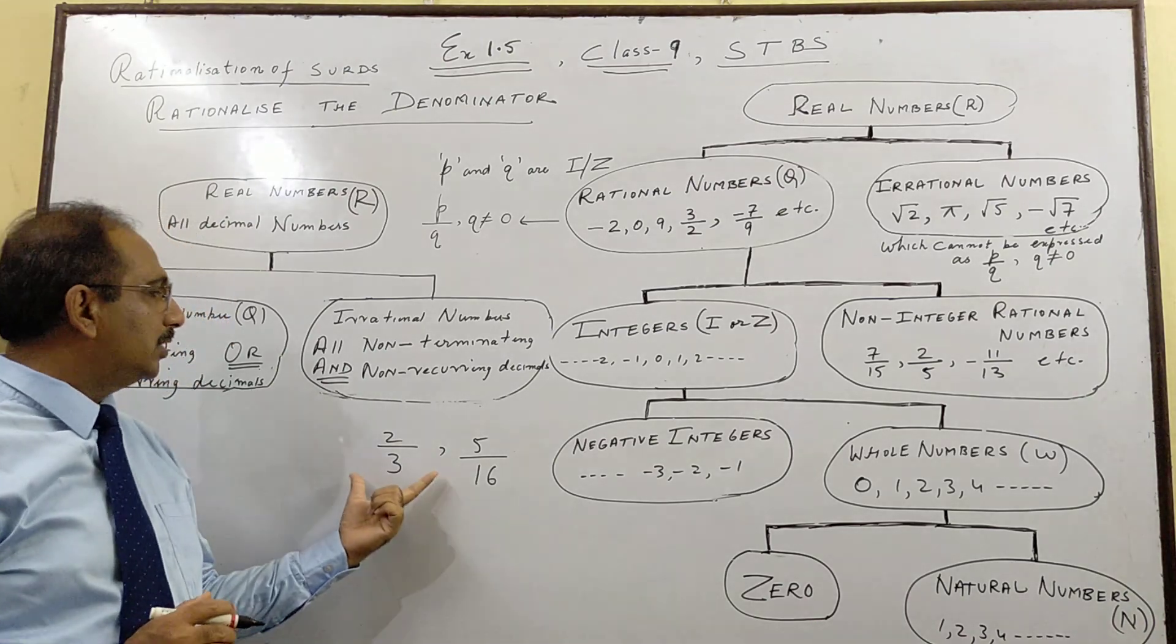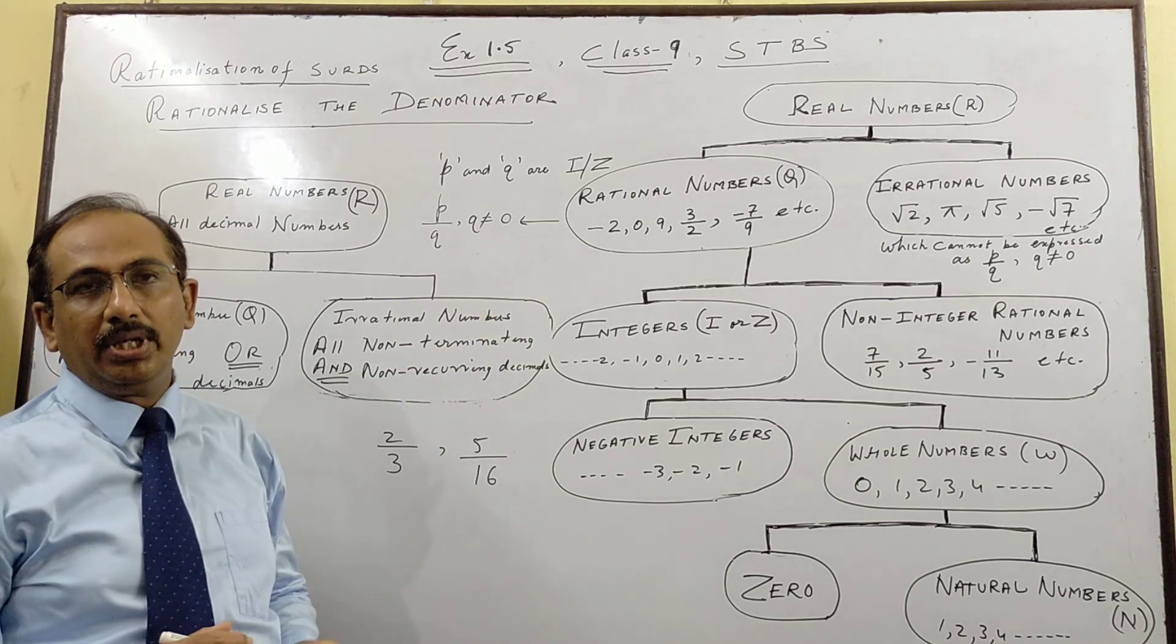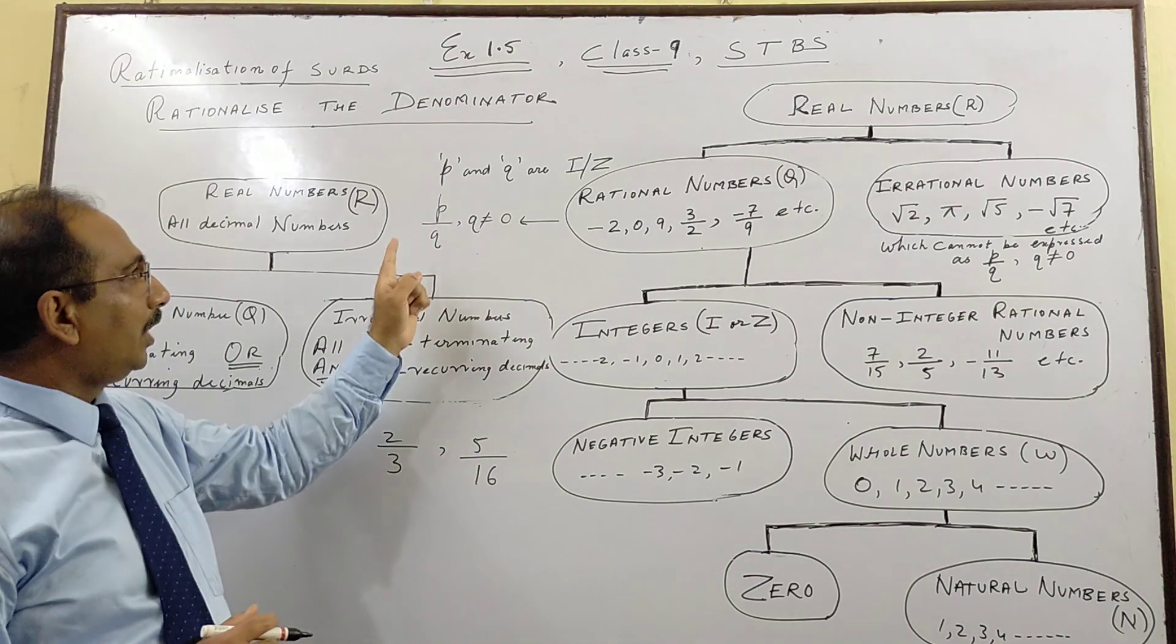So sometime we do need a fraction because everything in the world is not whole number like this. You need a fraction to define various things. So rational numbers are P by Q where P and Q are two integers. P by Q is a ratio. But denominator should not be equal to 0 because if denominator is 0, it becomes fully meaningless.